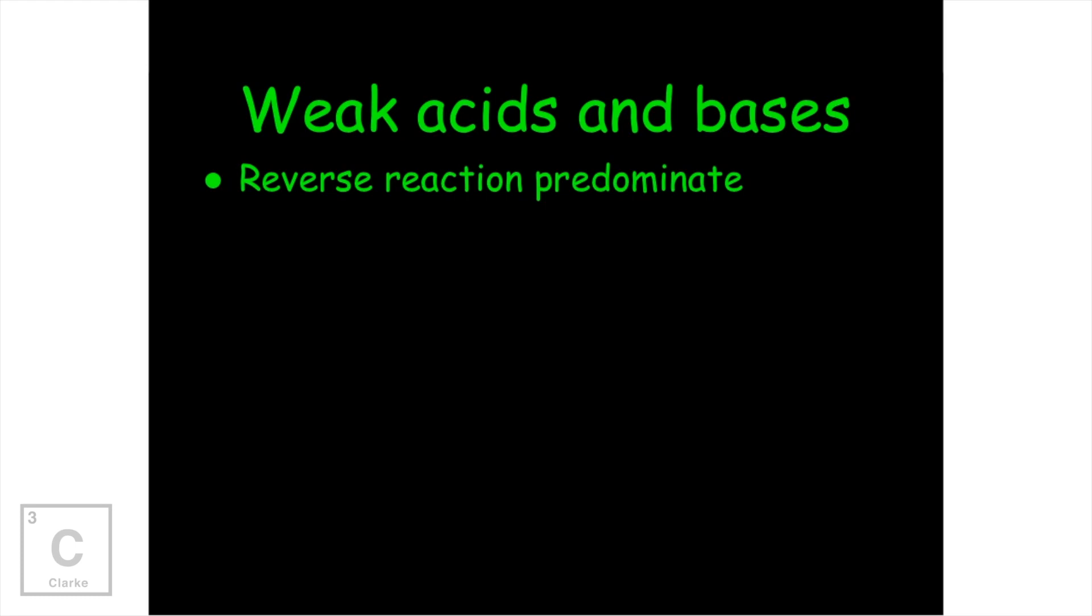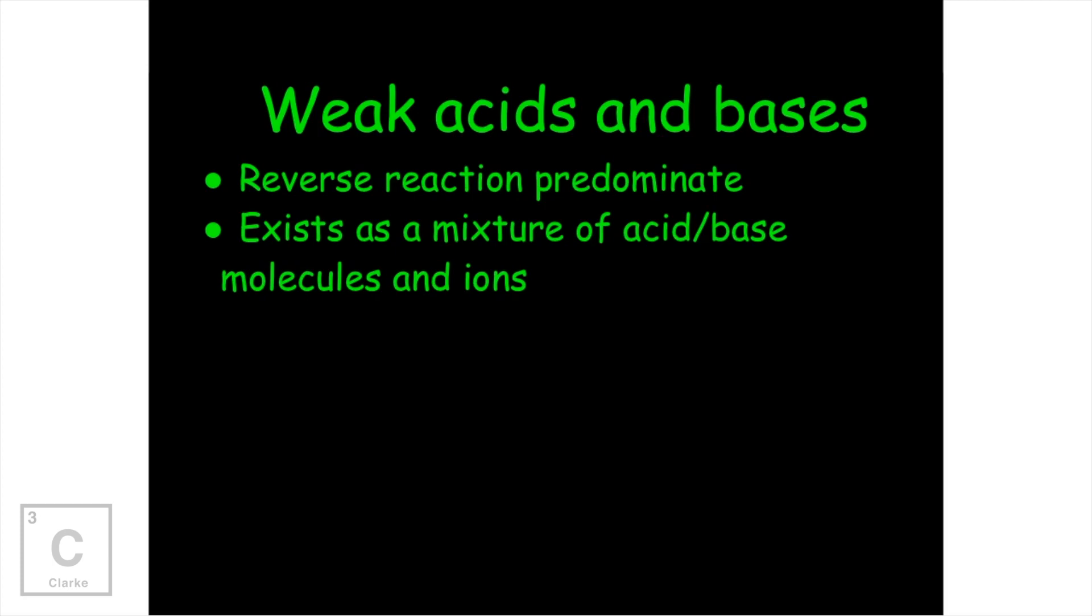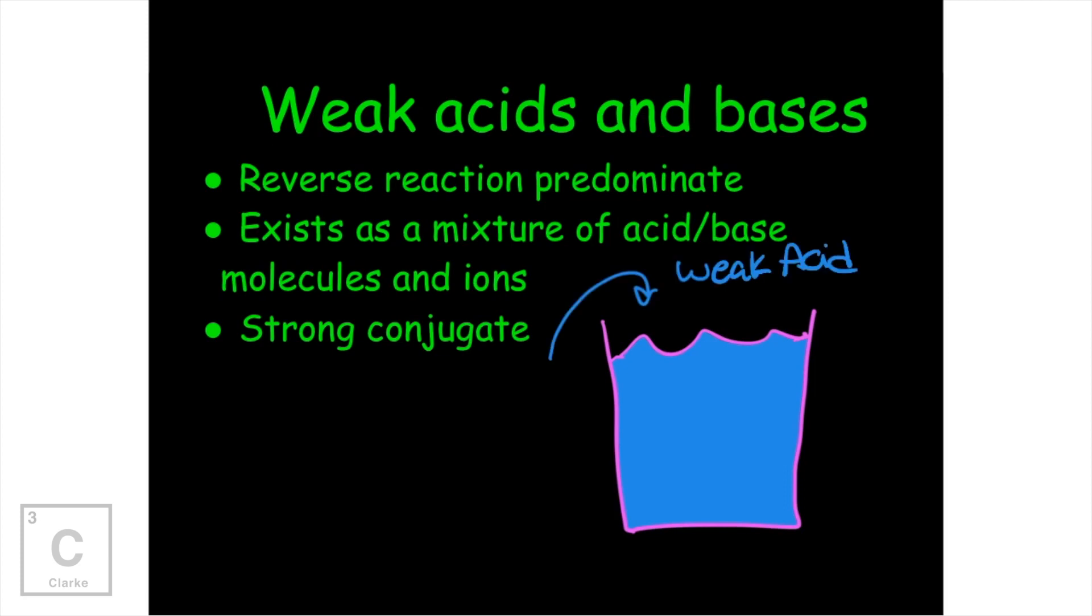Let's talk about weak acids and bases. For weak acids and bases, the reverse reaction actually is predominant. The reactants are favored over the products. And so when you mix these in a solution, when you dissolve these in water, since the reverse predominates and we favor the reactants, you're going to have a mixture of the acid or base molecule and its ions because they do not completely dissociate. If we had a beaker and filled it up with water, if we pour in that weak acid, it's going to dissociate.